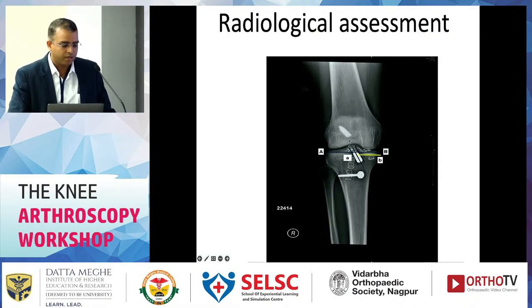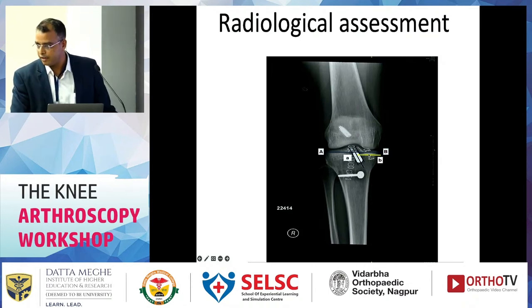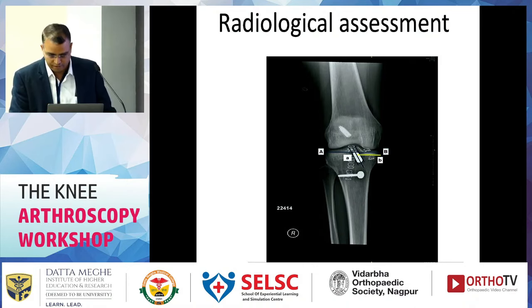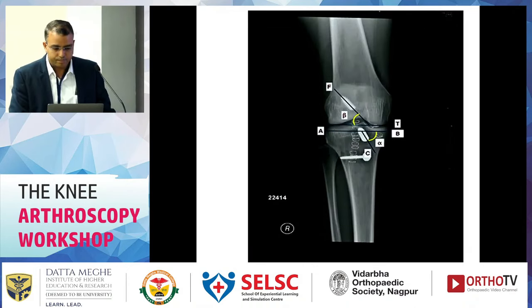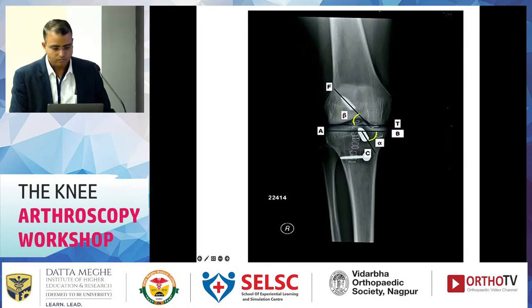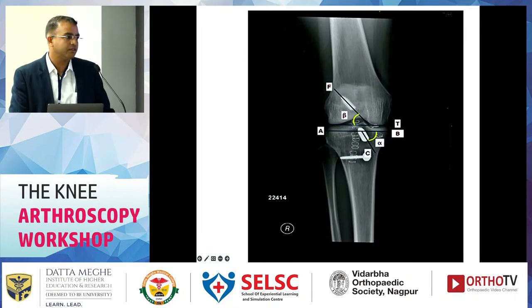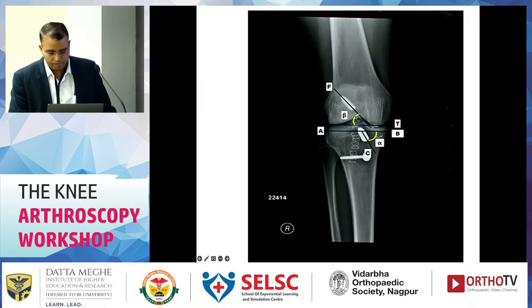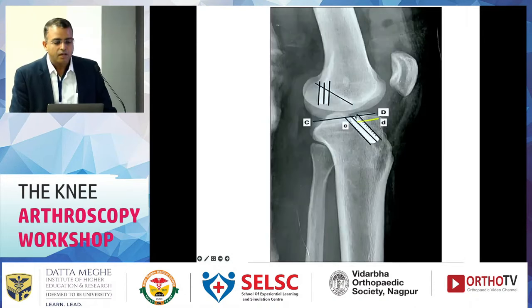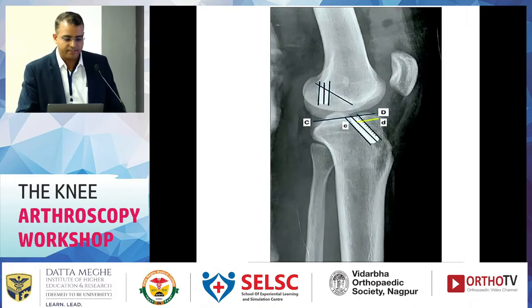On the anteroposterior x-ray in the coronal plane, the tibial tunnel should not be more than 70 degrees. Angle alpha should not exceed 70 degrees, otherwise your tunnel will be too vertical; and angle beta should not exceed 40 to 45 degrees. In the lateral or sagittal plane you can also assess your tunnels.